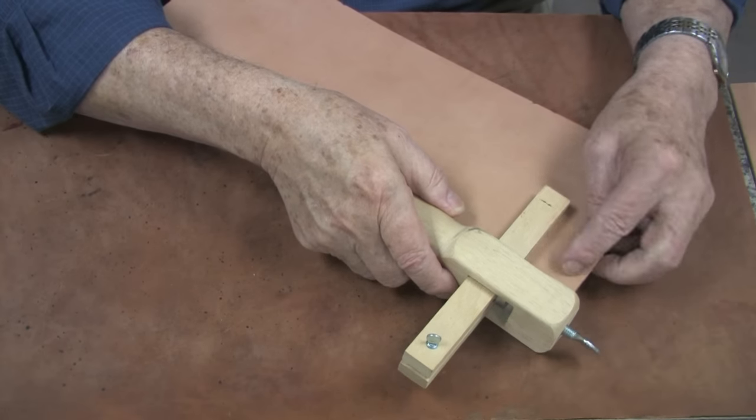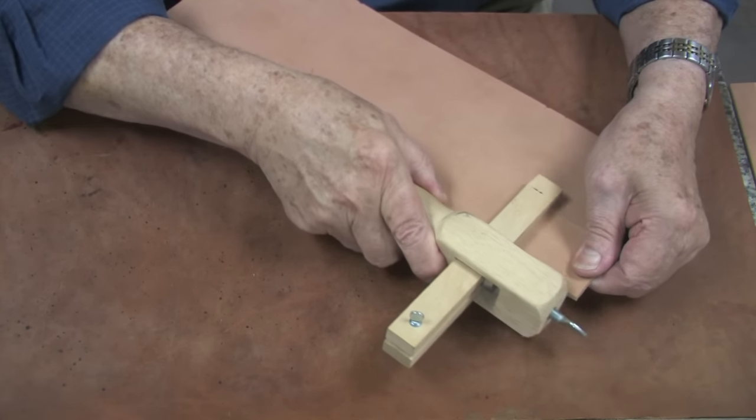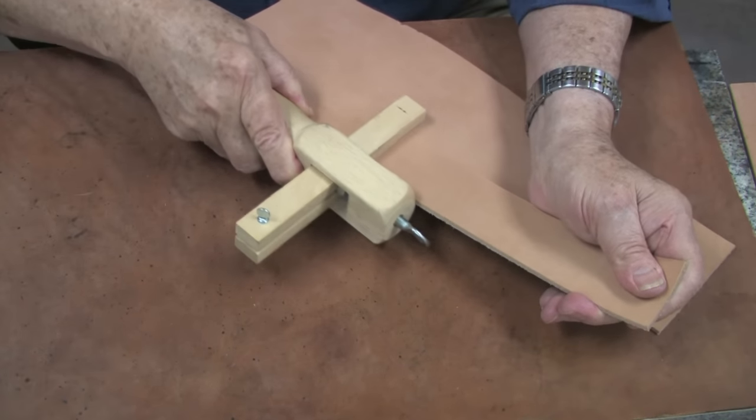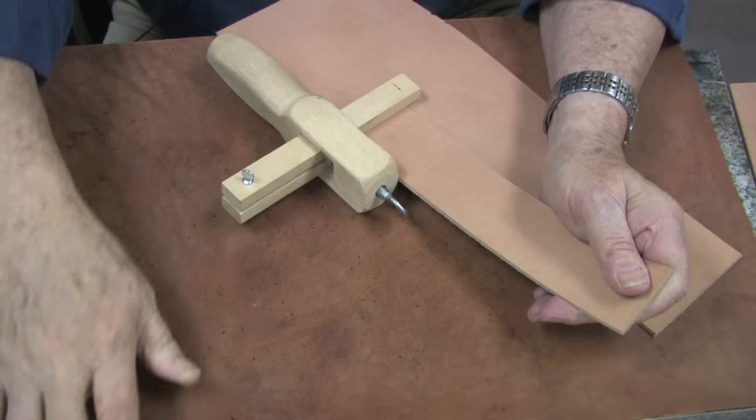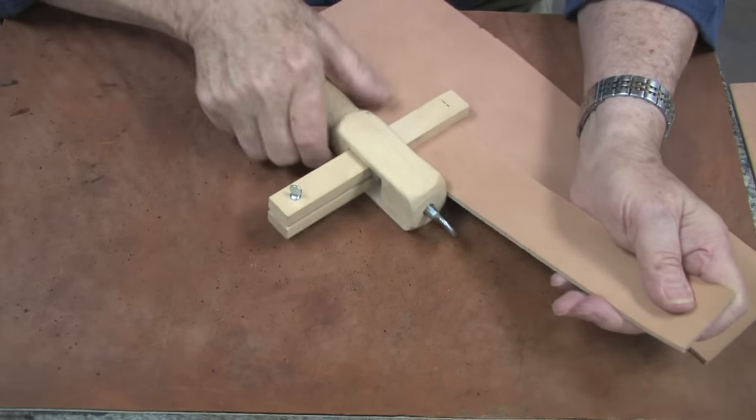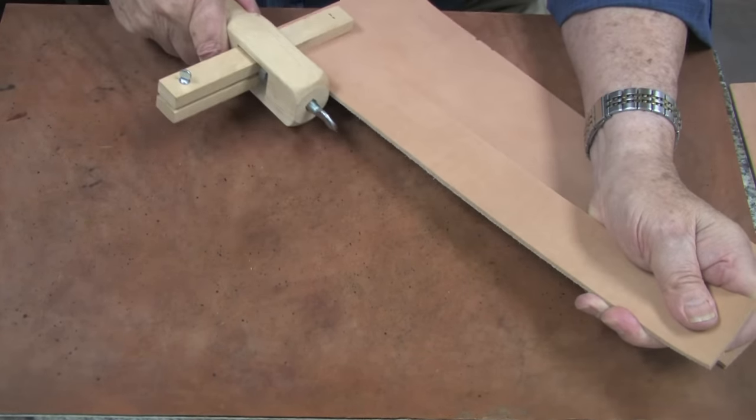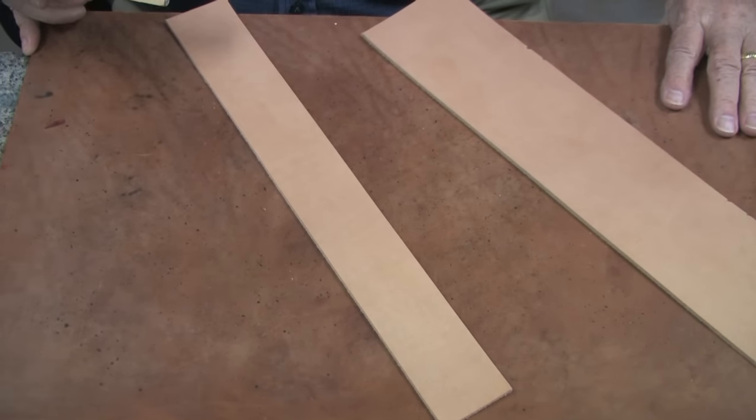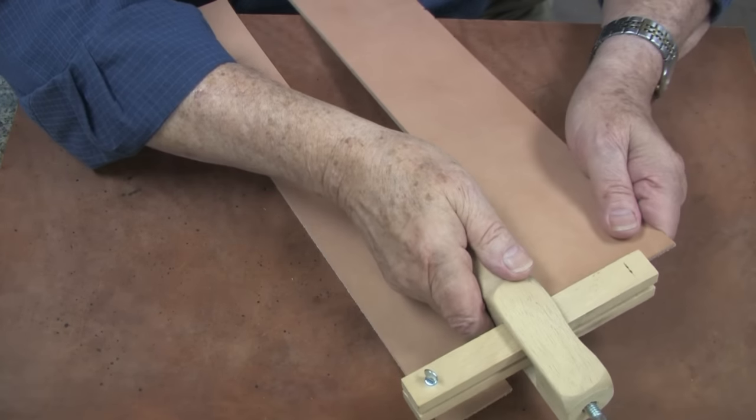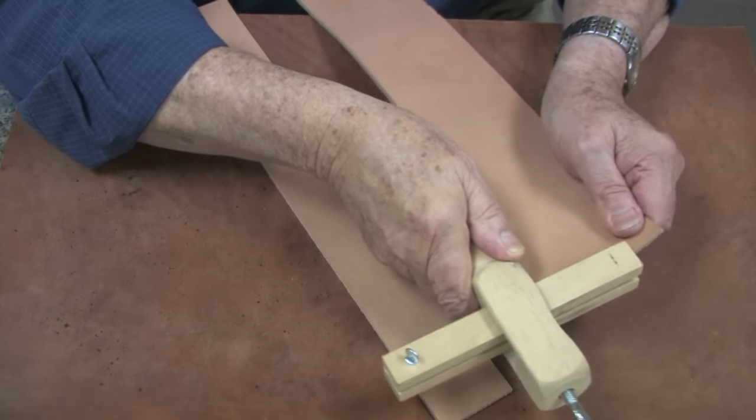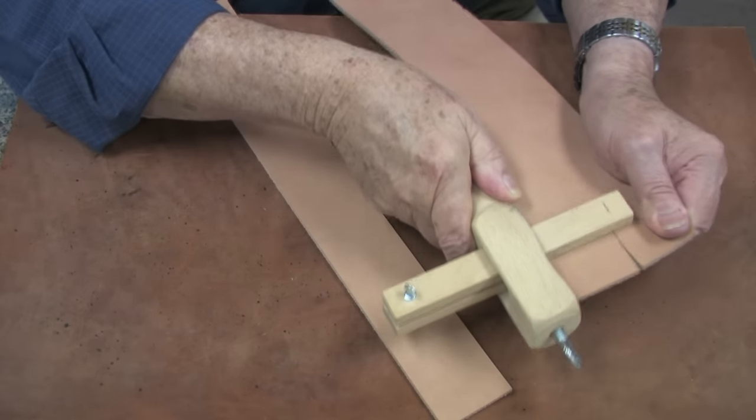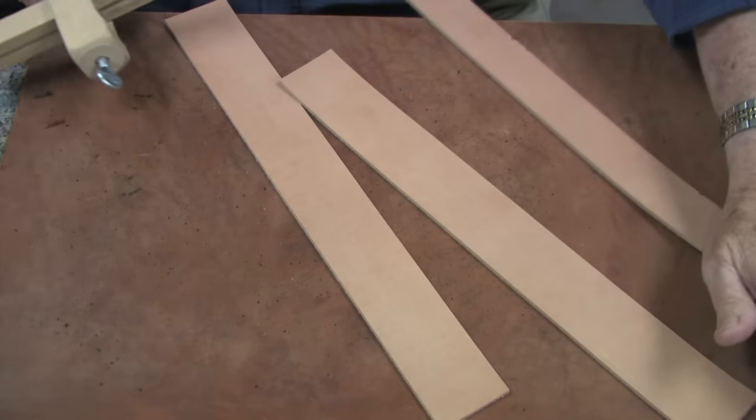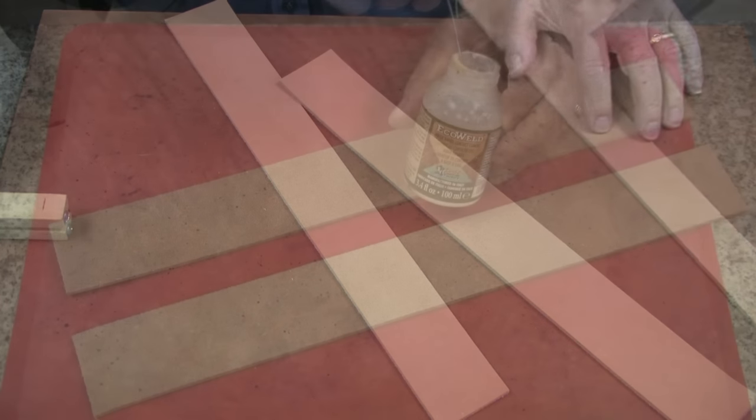To make a form for a two inch belt keeper, I'm going to cut a piece of eight to nine ounce vegetable tanned leather, and then I will cut a second piece. Depending on how long we want to make these will depend upon how many keepers you would like to make at one time.